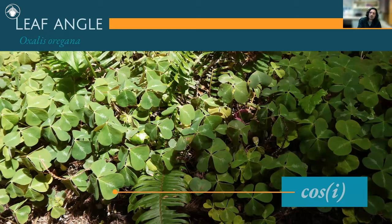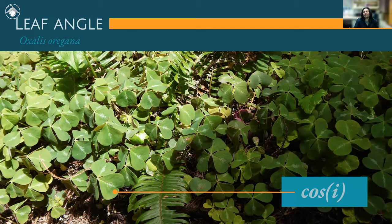This is another important strategy for regulating temperature and intercepted light, which we refer to as cosine I, or leaf angle. Here's an example from the redwood forest: Oxalis oregana in sunlight appear to wilt, but they're actually crimping their leaves to have a more oblique angle to the sunlight. Those in shade have their leaves flat — at what we'd call zero degrees with respect to the surface — in order to maximize the indirect sunlight they are receiving.